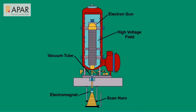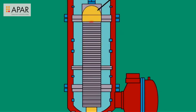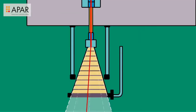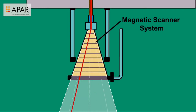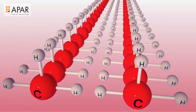An electron beam system consists of an electron gun to generate and accelerate the electron beam. High voltage is used to produce a high energy electron beam. There is a magnetic scanner system to direct and control the electron beam when bombarding the material.